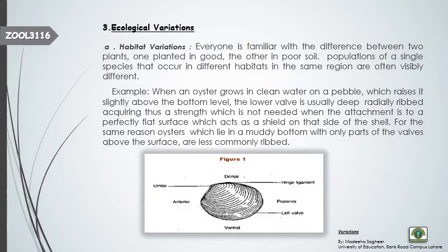The third type of non-genetic intra-population variation is ecological variations. Ecological variations are due to the relationship of an organism to its environment, its habitat, and to other organisms of the same population. The first type of ecological variation is habitat variation. Habitats affect organisms greatly. If a seed is planted in well-nourished soil, growth will be good; if planted in malnourished soil, growth will be poor. In populations of a single species occurring in different habitats within the same region, there will be visibly different phenotypes.